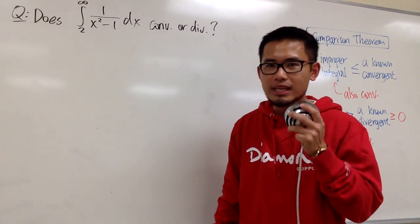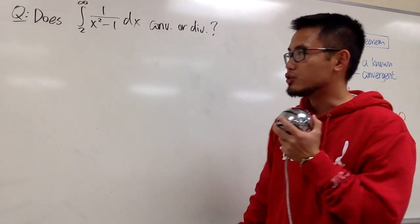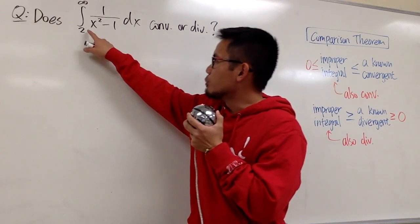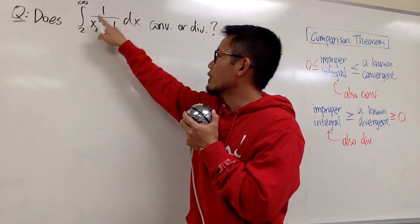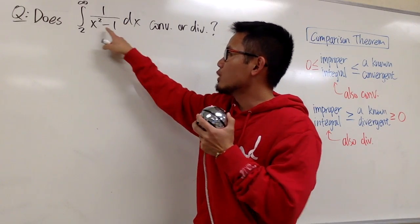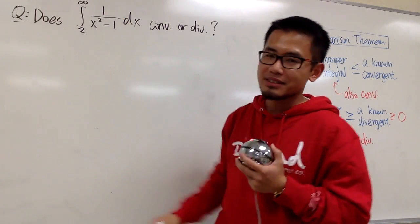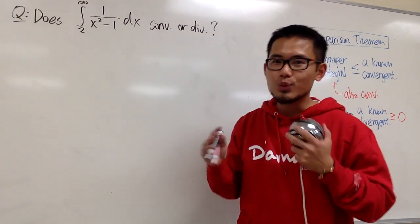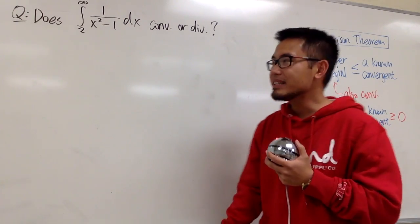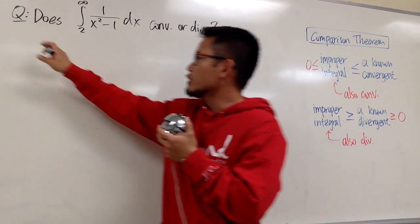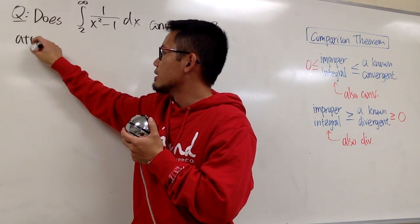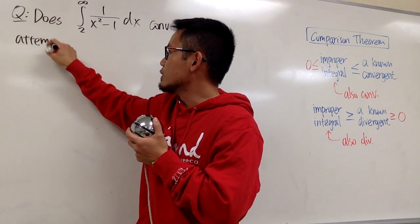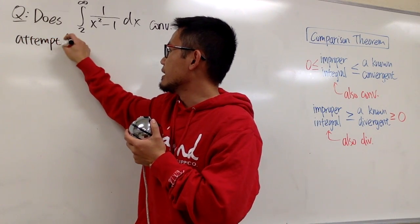We're going to see if we can use the comparison theorem to show that the improper integral from 2 to infinity of 1 over x squared minus 1 dx converges or not. This is just going to be my attempt, and you'll see why in a minute.